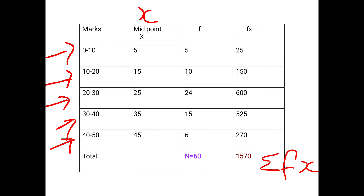Now add all the f values — that is Σf or N. Adding all f values gives N = 60. Then add all the fx values — that is Σfx. Adding all fx values gives Σfx = 1570.